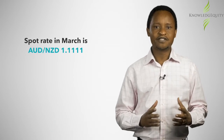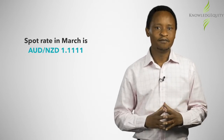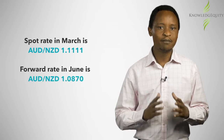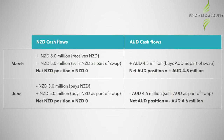The organization could enter into an FX swap to remove the timing mismatches by moving all the New Zealand dollar exposure to a single period such as March. Assume the spot rate in March is 1.1111 and the June forward rate is 1.087. The organization would enter into an FX swap to sell 5 million New Zealand dollars in March at the spot rate of 1.1111, and buy 5 million New Zealand dollars in June at the forward rate of 1.087.